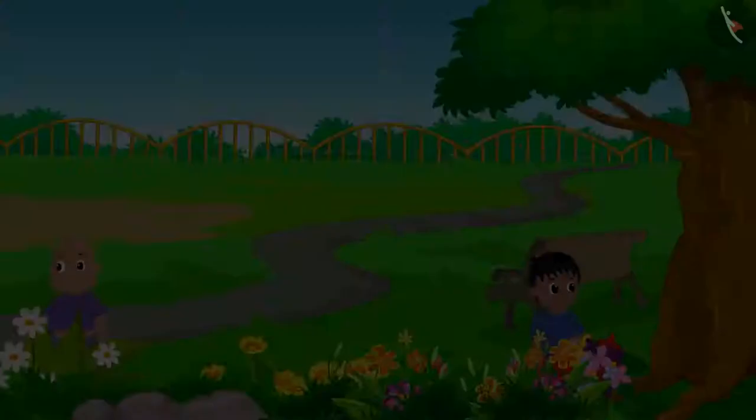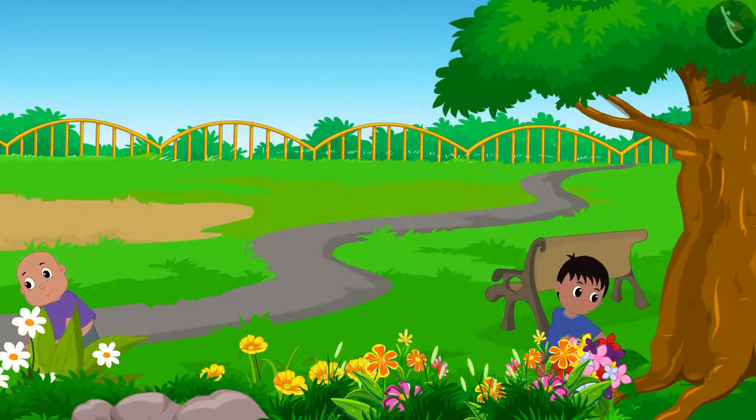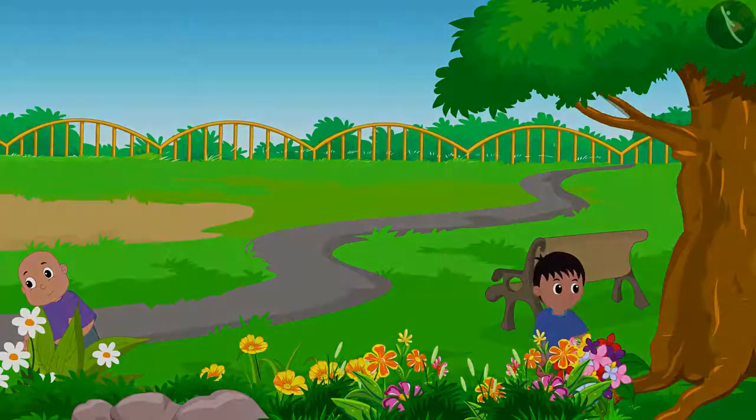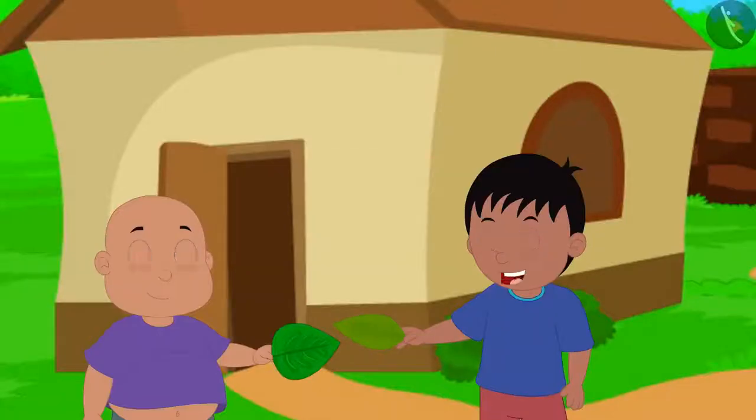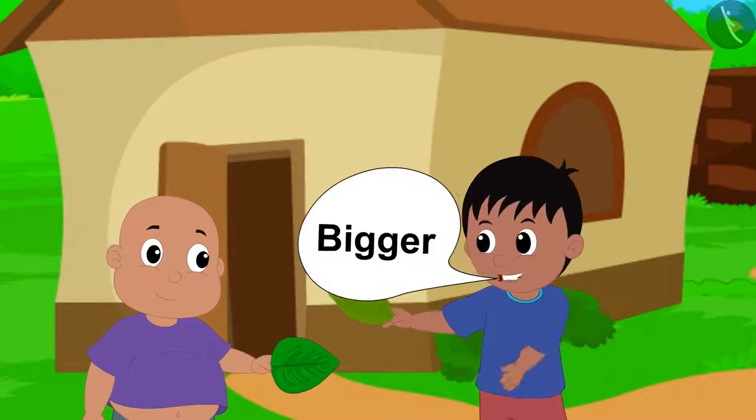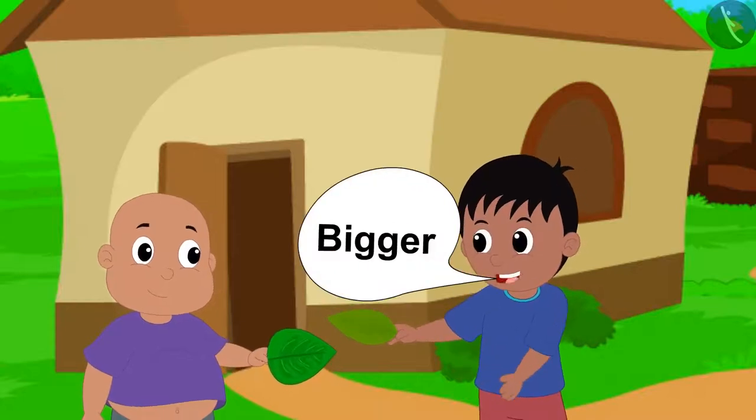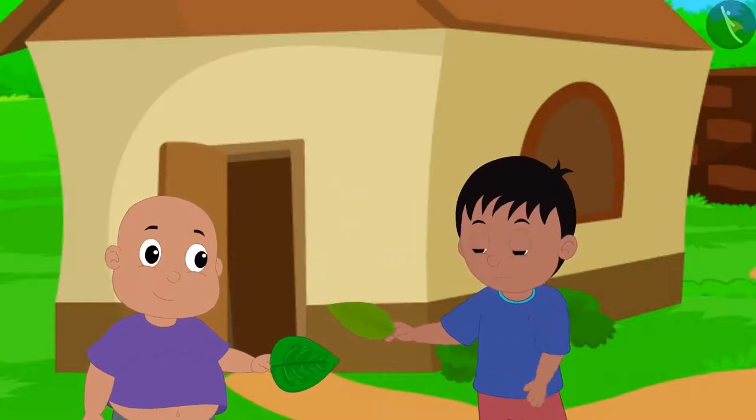Both friends began to find leaves outside Bablu's house. Both Bablu and Raju found one leaf each. Bablu, we should use the bigger of these two leaves to make our painting. Raju told Bablu.